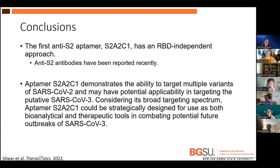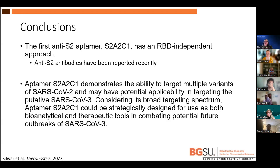In conclusion, we reported the first anti-S2 aptamer. It provides a receptor-binding-domain-independent approach to inhibit the virus from using the spike protein to recognize human cells. Because the S2 domain is highly conserved, we believe we now have a tool in advance to fight SARS-CoV-3. Maybe in the next decades, when SARS-CoV-3 comes, we will have this aptamer, which can be designed as a bio-detection tool or used as a therapeutic tool. By the way, after we reported the first anti-S2 aptamer, others subsequently reported an anti-S2 antibody and observed it can also block the virus from infecting human cells. But our aptamers are 2,000 times cheaper than antibodies.